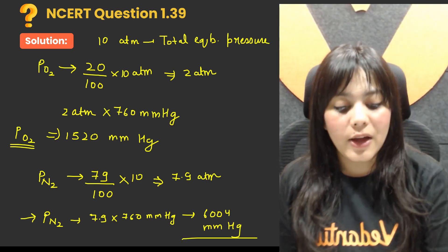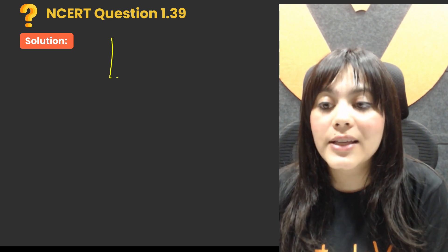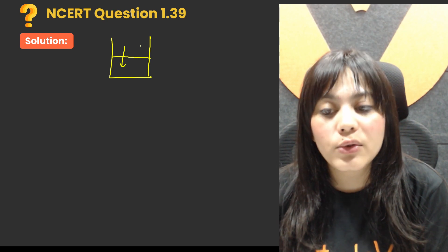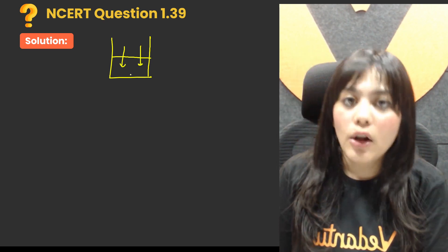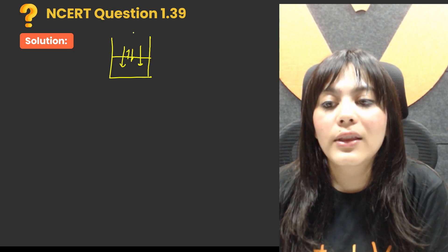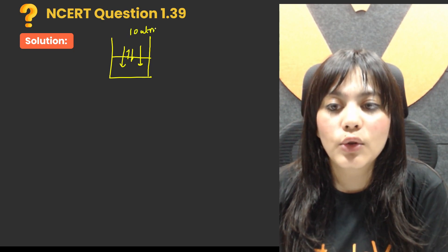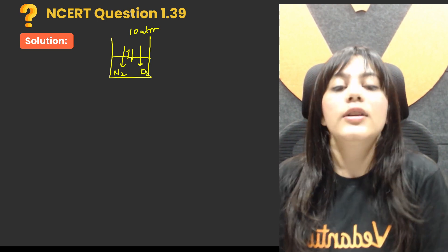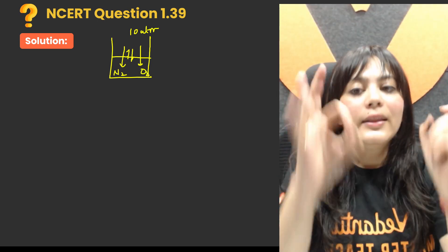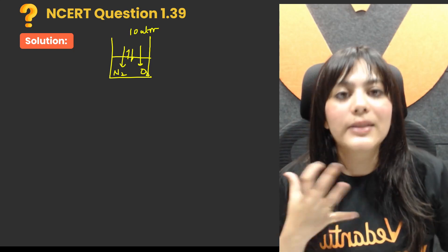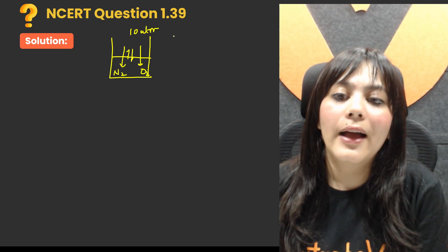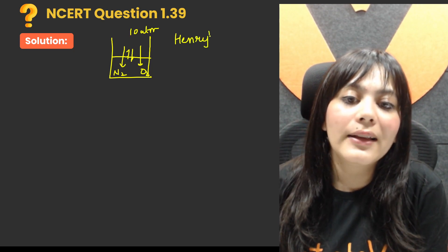Now that we have both partial pressures, let's revisit the question. In a beaker there is water. Nitrogen and oxygen are dissolving little by little into this water, and the equilibrium pressure is 10 atmospheres. Henry's law will apply here because we are mixing gas into a liquid.